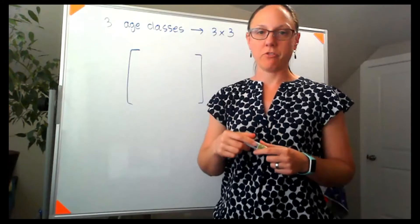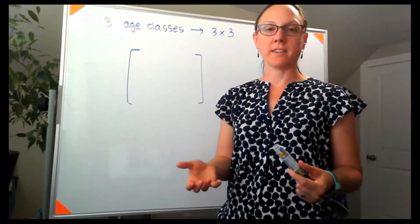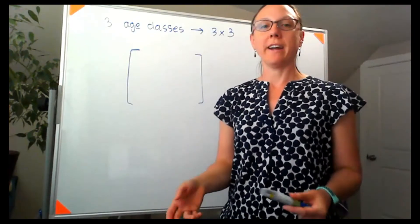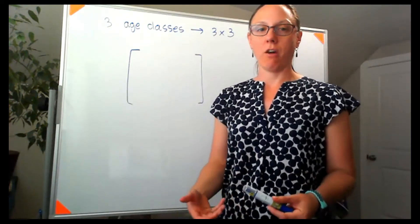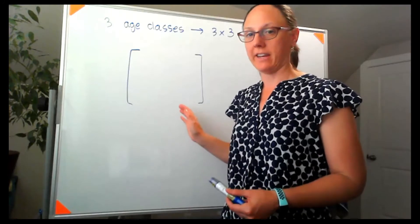Now the top row of the matrix, if it's a Leslie matrix, there's actually a special word for it. It's called the fecundity. So the top row represents the average number of female offspring for each of our three age classes.